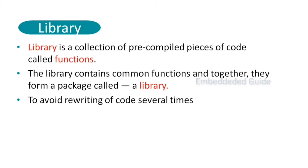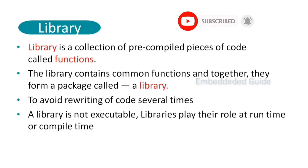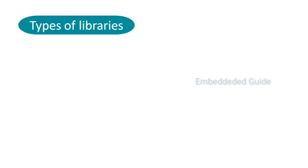We can use that piece of code several times across multiple projects — this is how libraries save the programmer effort. A library is not an executable. We can use these libraries at runtime and compile time. We have two types of libraries: static library and dynamic library.